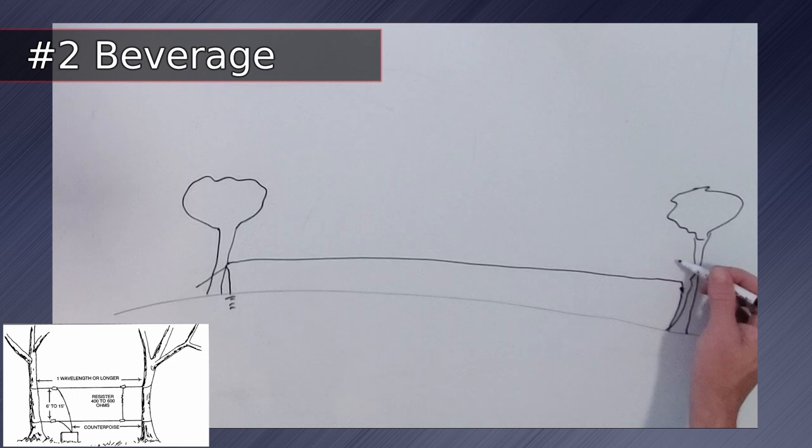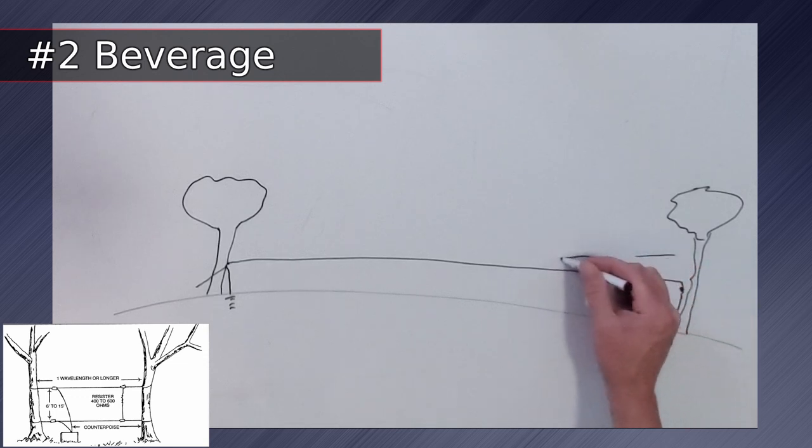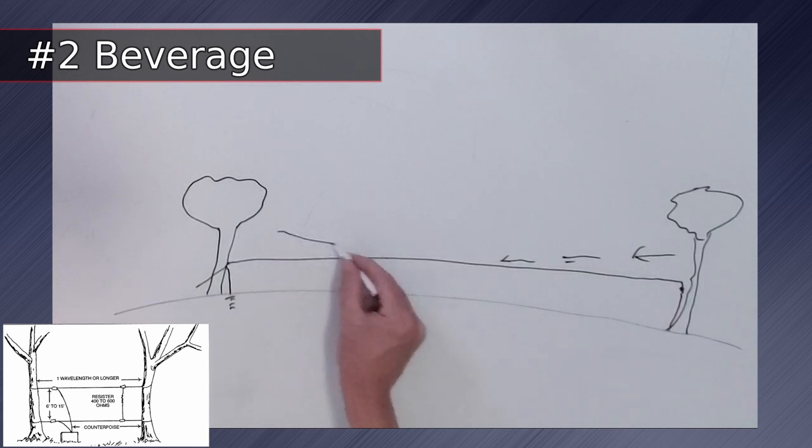The coax is connected to one end of the wire with a ground and a balun. And a resistor to ground is used to terminate the other end, giving it a low noise floor. This antenna is extremely directional, making it a great choice for DX work.